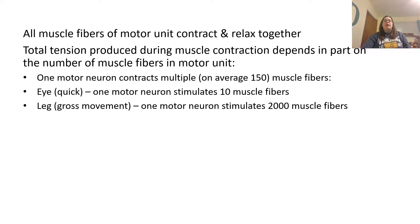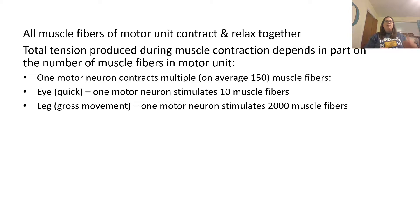All muscle fibers of a motor unit will contract and relax together, so the total tension produced during muscle contractions depends on the number of fibers involved. One motor neuron can stimulate multiple muscle fibers — on average about 150. In the eye, one motor neuron stimulates only 10 fibers, allowing quicker movement. But in the leg for larger gross movements like the quadriceps, one motor neuron stimulates 2,000 muscle fibers. The difference affects how quickly they can be organized and moving — eye movements are much quicker than leg movements.